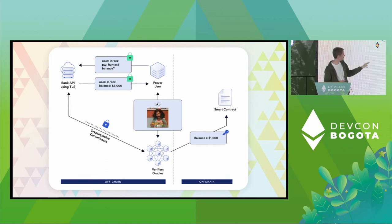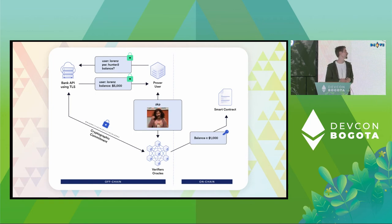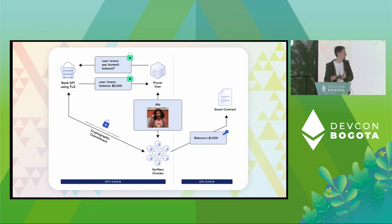The oracles can then cryptographically sign an attestation that they have successfully verified this zero-knowledge proof. This attestation can be forwarded to our smart contract on chain, signed by a quorum of oracles, and we can verify in the contract that those signatures match. So I have convinced the contract on chain that I have at least a thousand dollars — without having revealed any additional information.